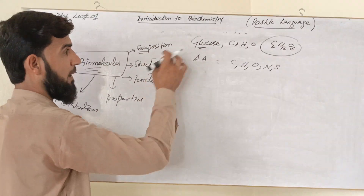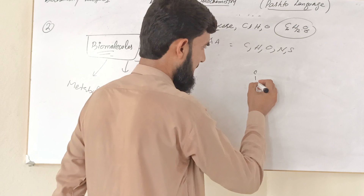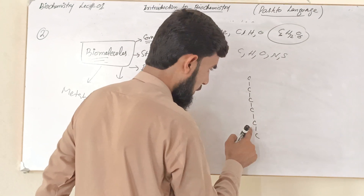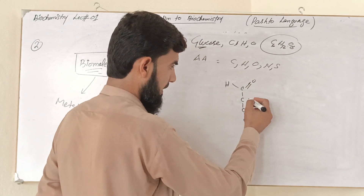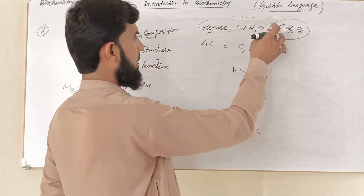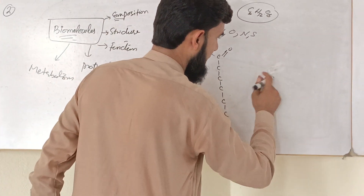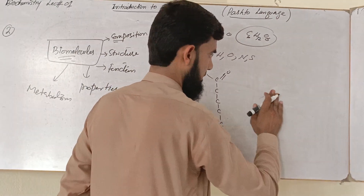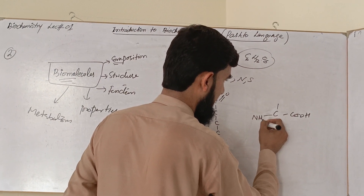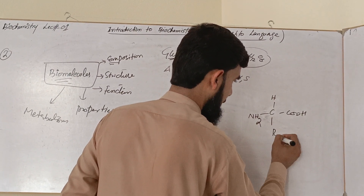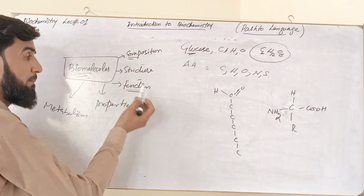The structure of glucose has six carbons, with a carboxylic group. The structure of an amino acid has a carboxylic group, an amino group, a hydrogen atom, and a variable alkyl group. These are the functions of the bio-molecules, for example proteins.